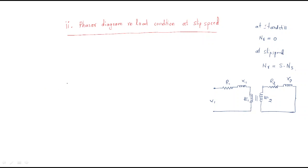The first step is to draw the induced EMF in the primary winding. The induced EMF in the primary winding is minus E1, but in order to draw it with the same magnitude in the forward direction, we represent it as plus E1. E1 and E2 are in the same phase, but E2 has a smaller magnitude.